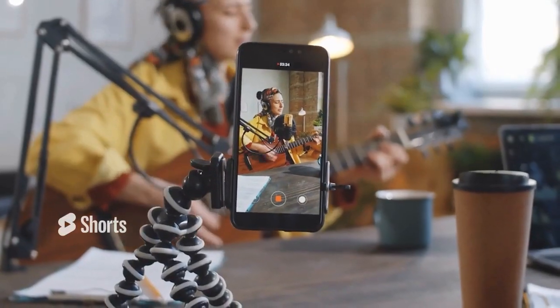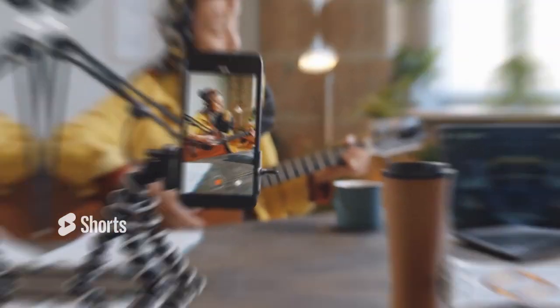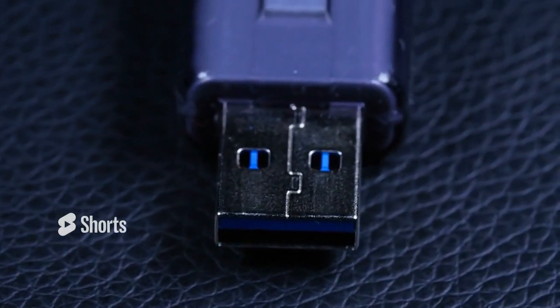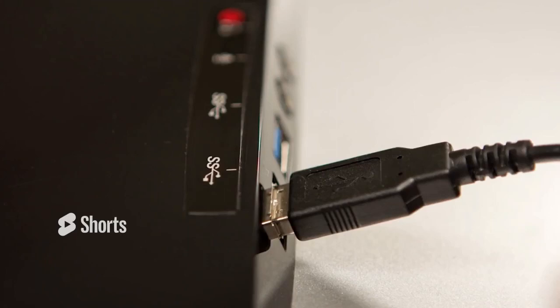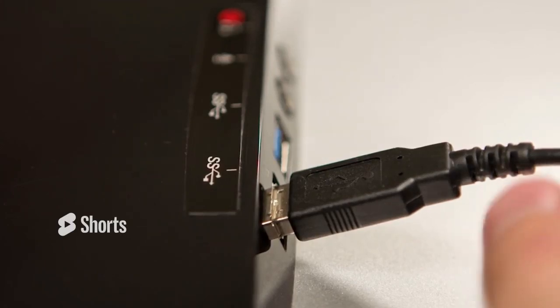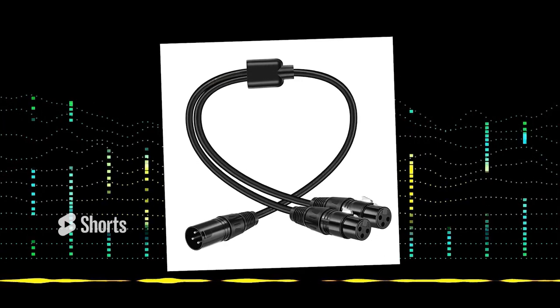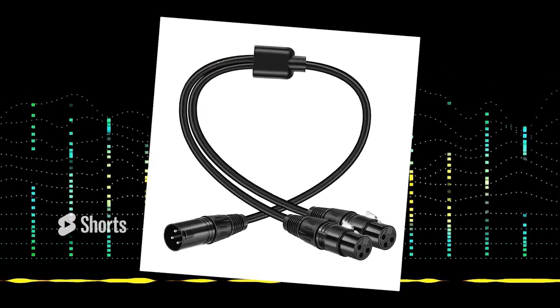Connection type will determine how you will use the mic. The two most common connection methods for microphones in streaming are XLR and USB, though there are some key differences. You cannot connect an XLR microphone directly to your PC. To connect an XLR microphone, you must purchase a mixer or audio interface. This additional investment gives you more control over the sound, and therefore better overall sound quality.